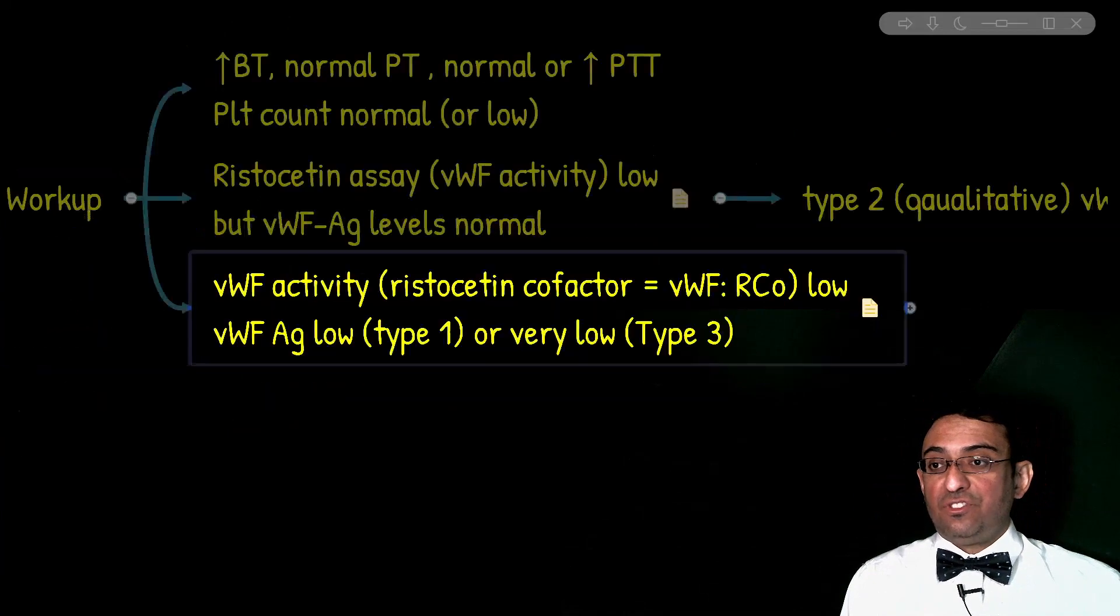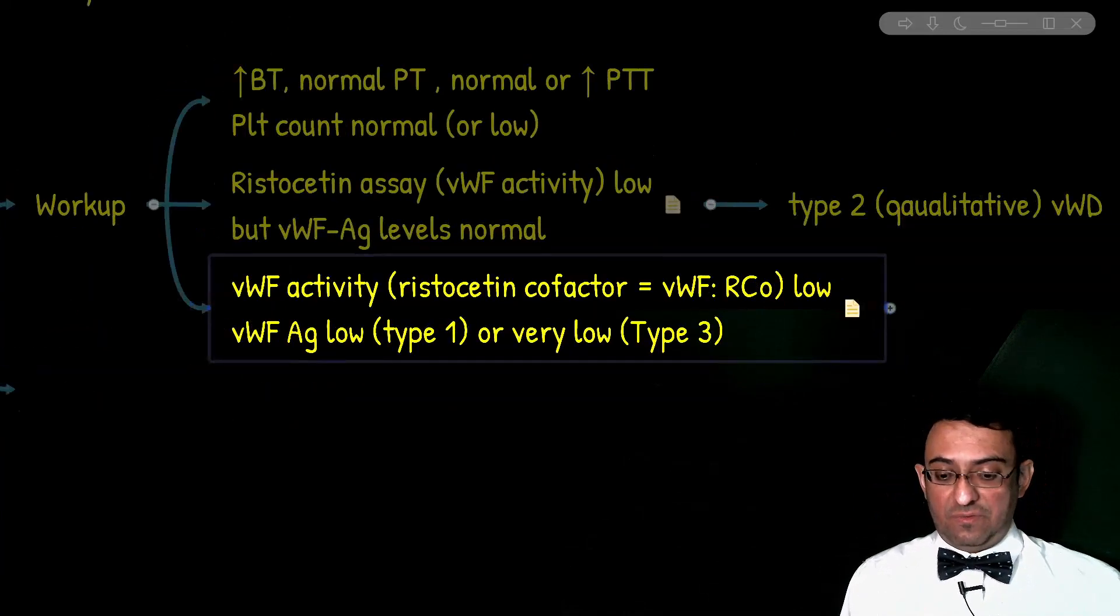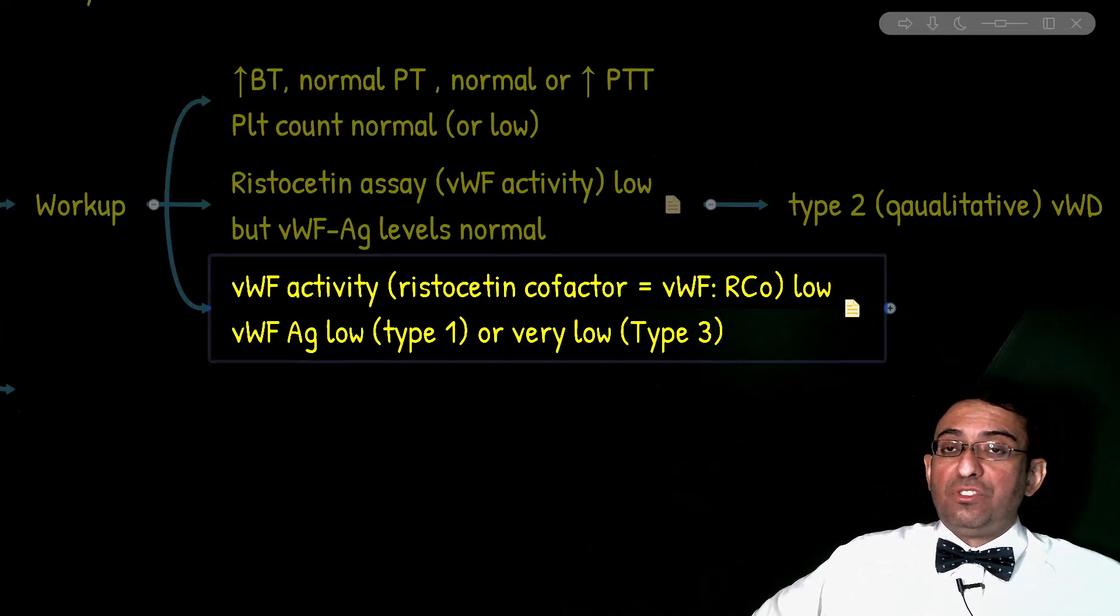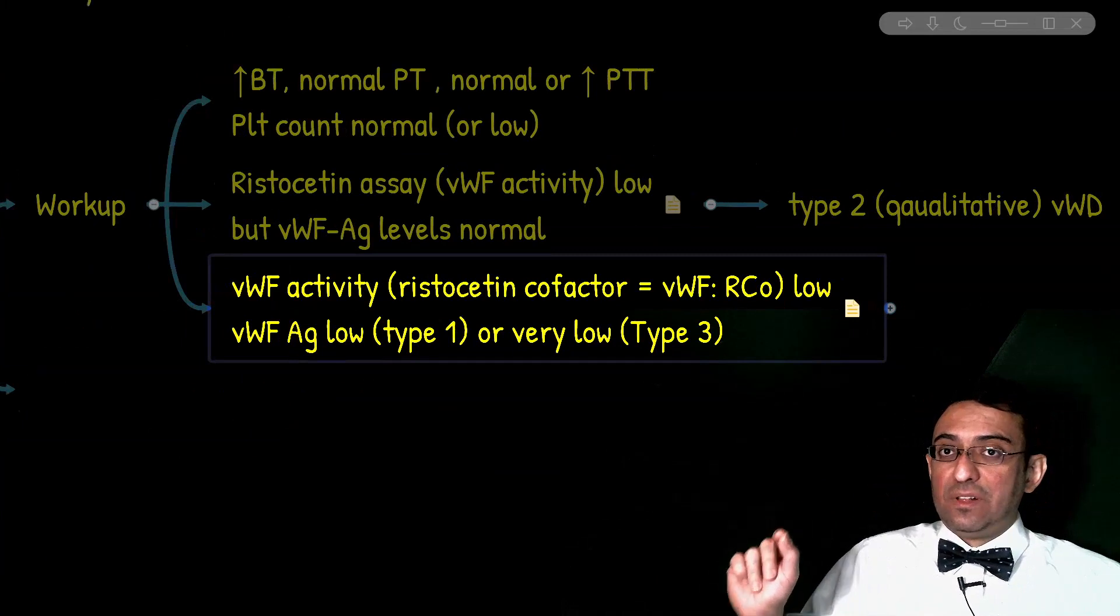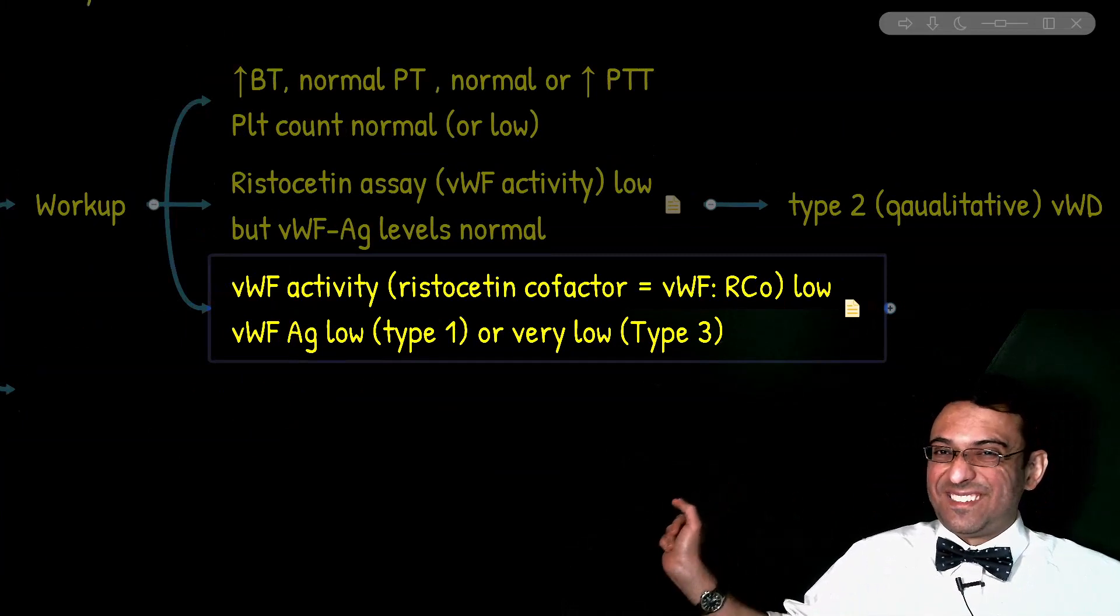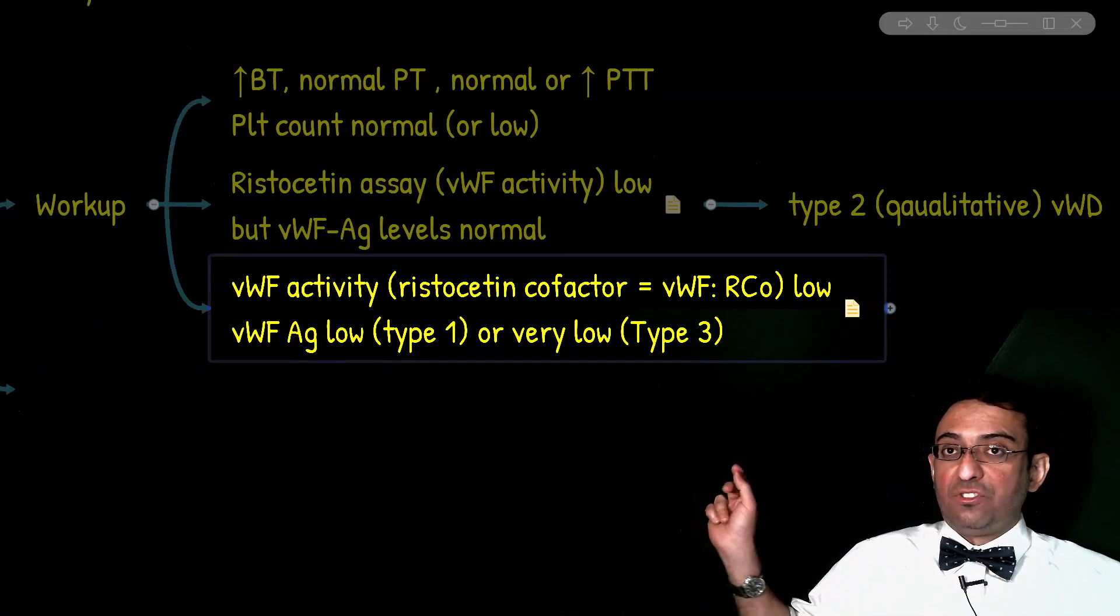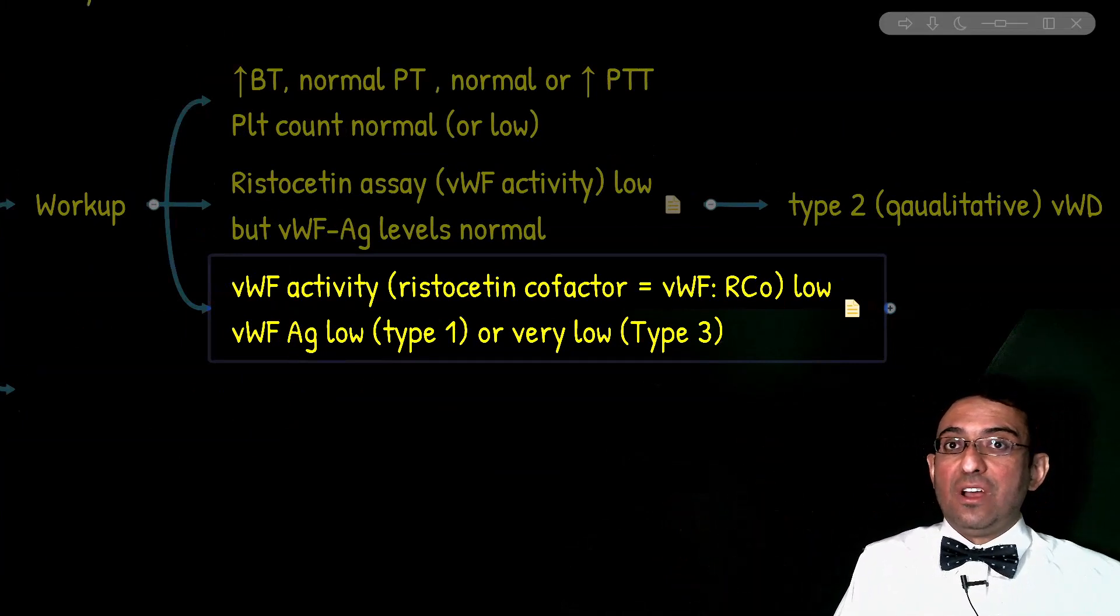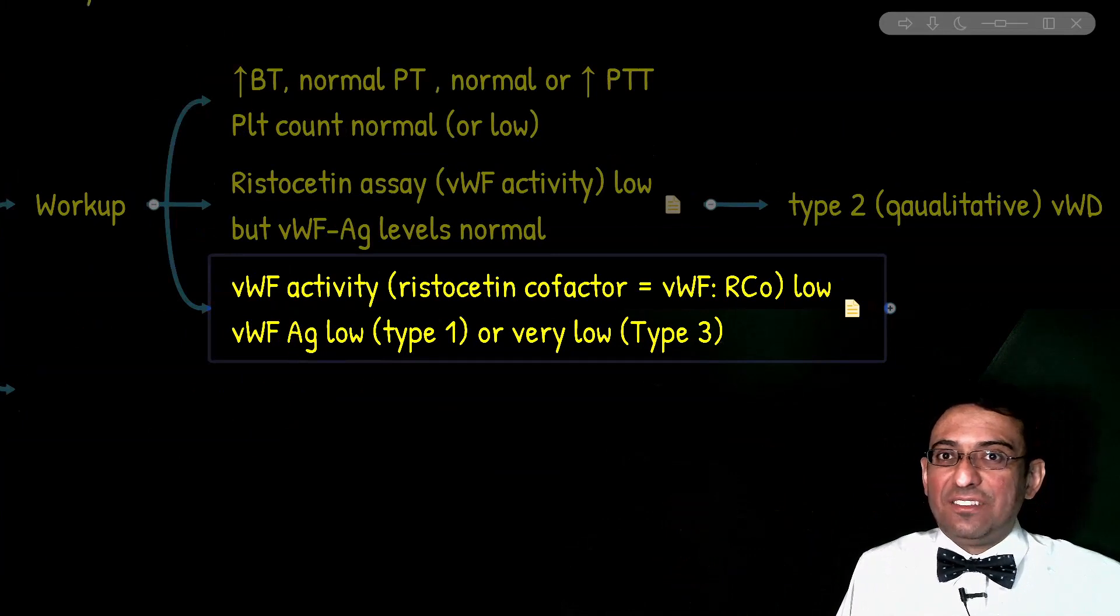On the other side, if we have von Willebrand activity that's impaired, both Ristocetin cofactor assay as well as the von Willebrand antigen levels will be abnormal because if you have low levels, the function would necessarily also be impaired. And so, we distinguish them based on the levels of von Willebrand factor antigen.